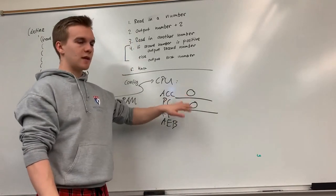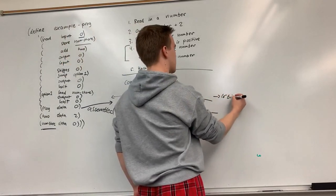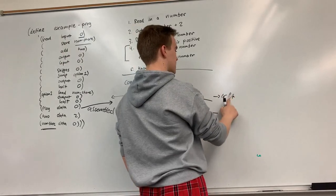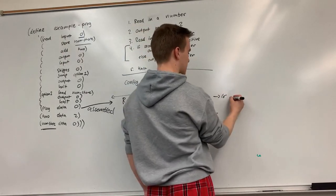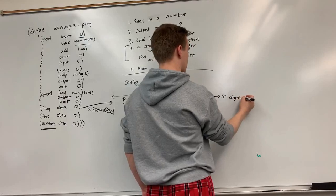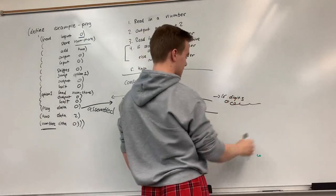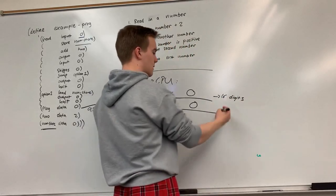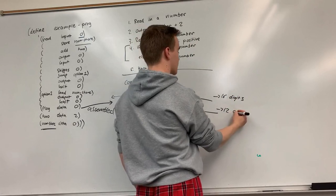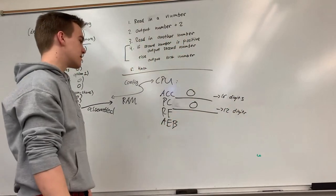These would be in binary so the accumulator is actually 16 bits, 16 bits, yeah 16 bits, 16 digits I'll just say. Be careful. So this would be actually zero zero zero zero 16 times. But I'm just going to write it in decimal. The program counter I think is 12 digits. Again I'm just going to use the decimal representations because it's easier here.